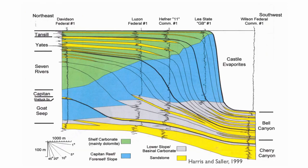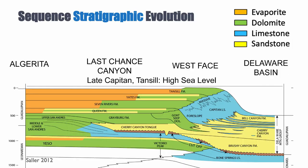If you look at logs through that system, in the back you would see nice clastic sands that could potentially be good reservoir, characterized by high gamma ray. You also see sands in the gamma ray associated with the slope and the basin. In between, in the reef, there is very little sand — so the reef is not where you'll find most of the sands.